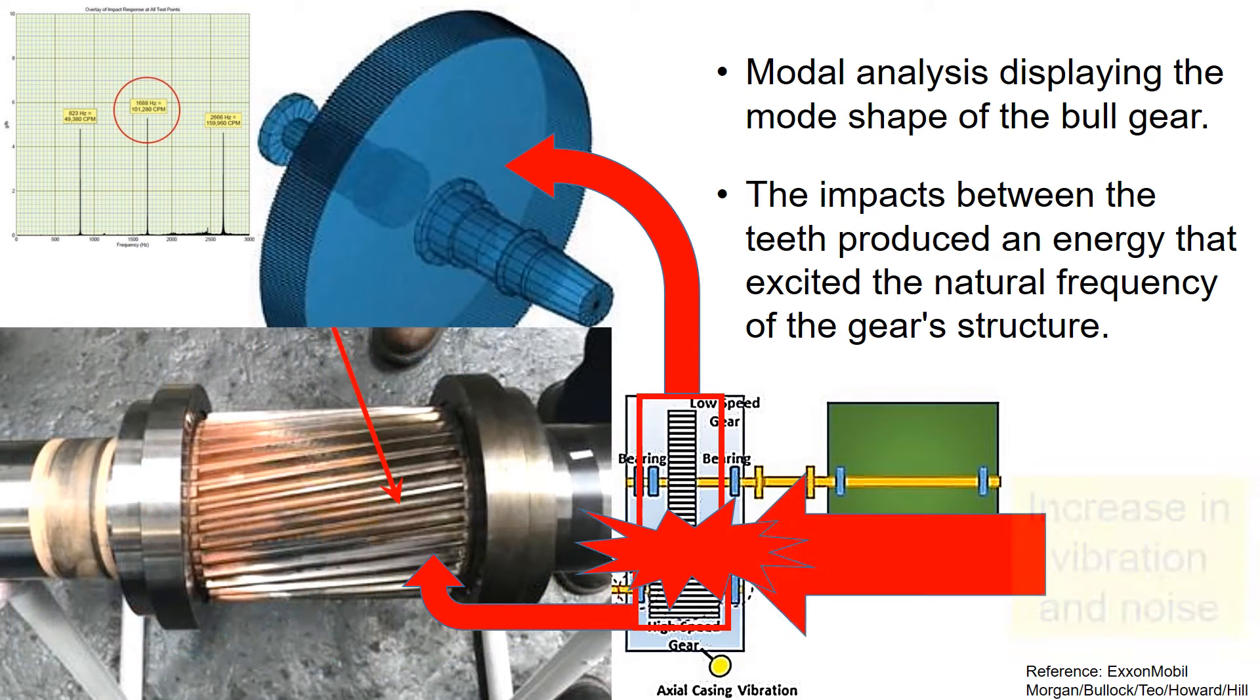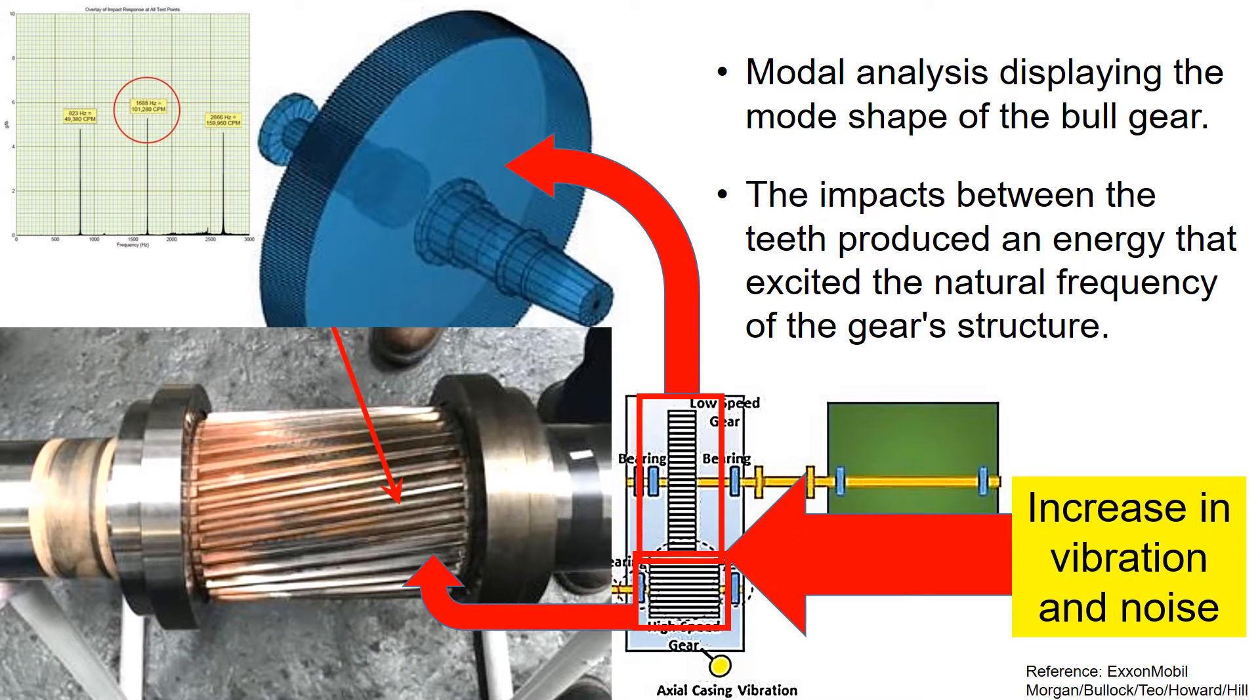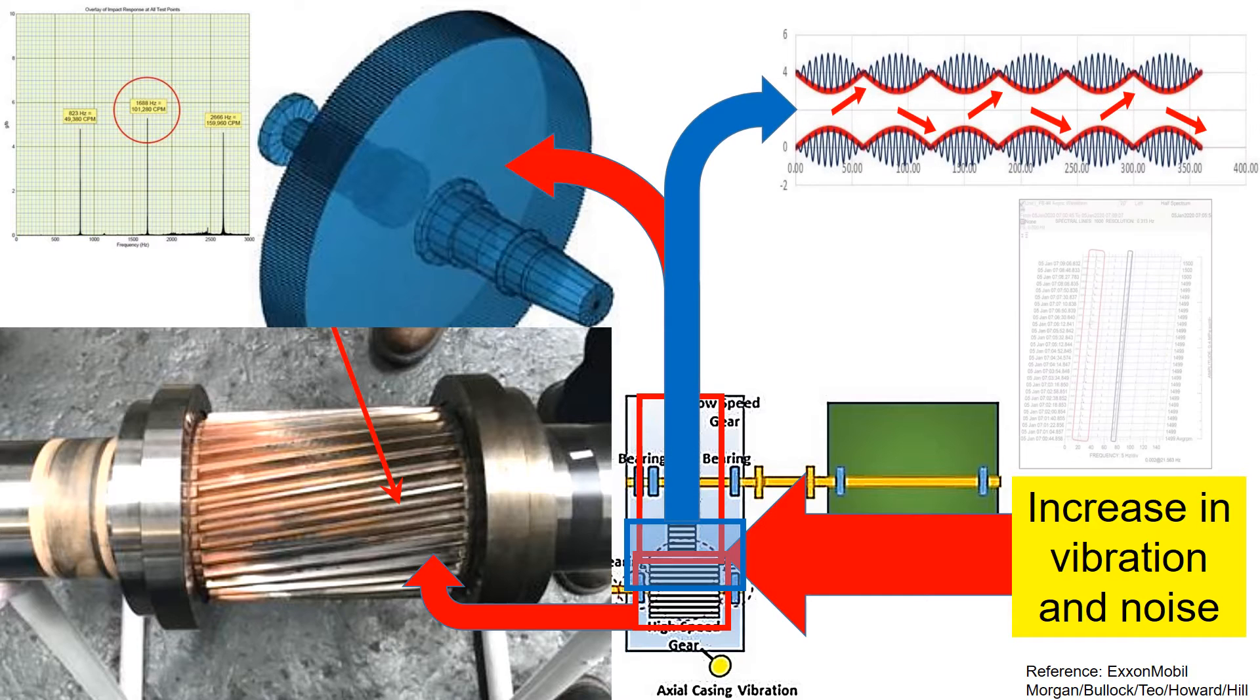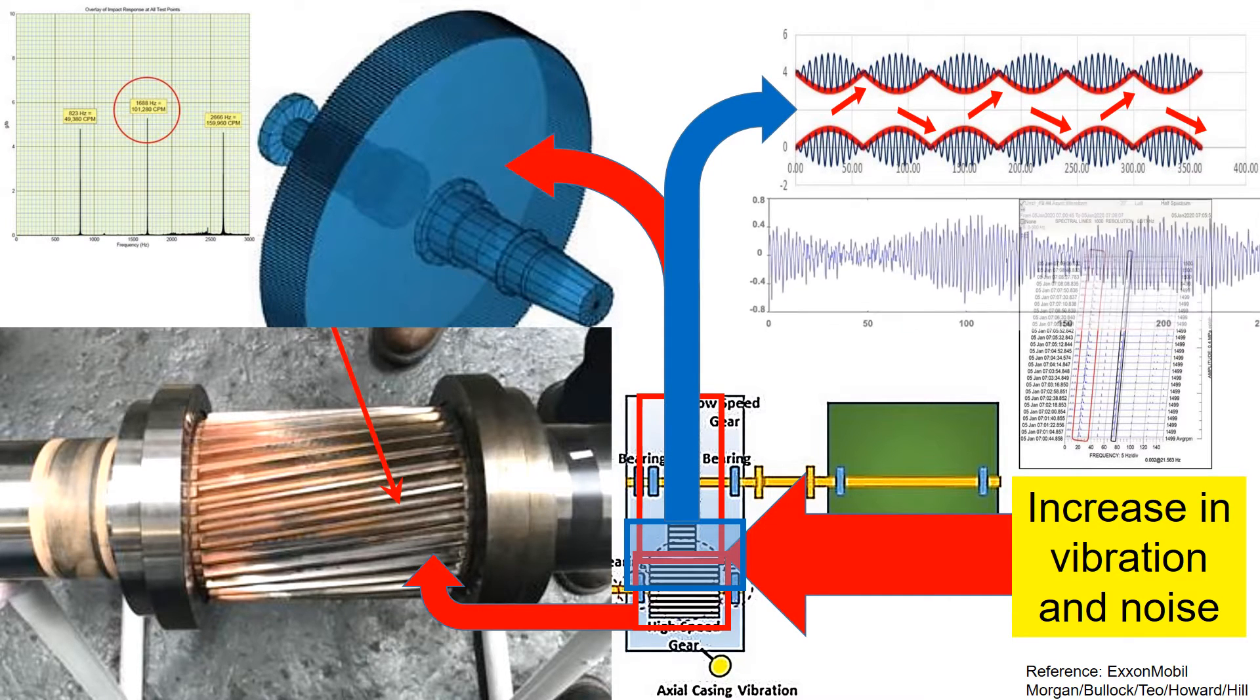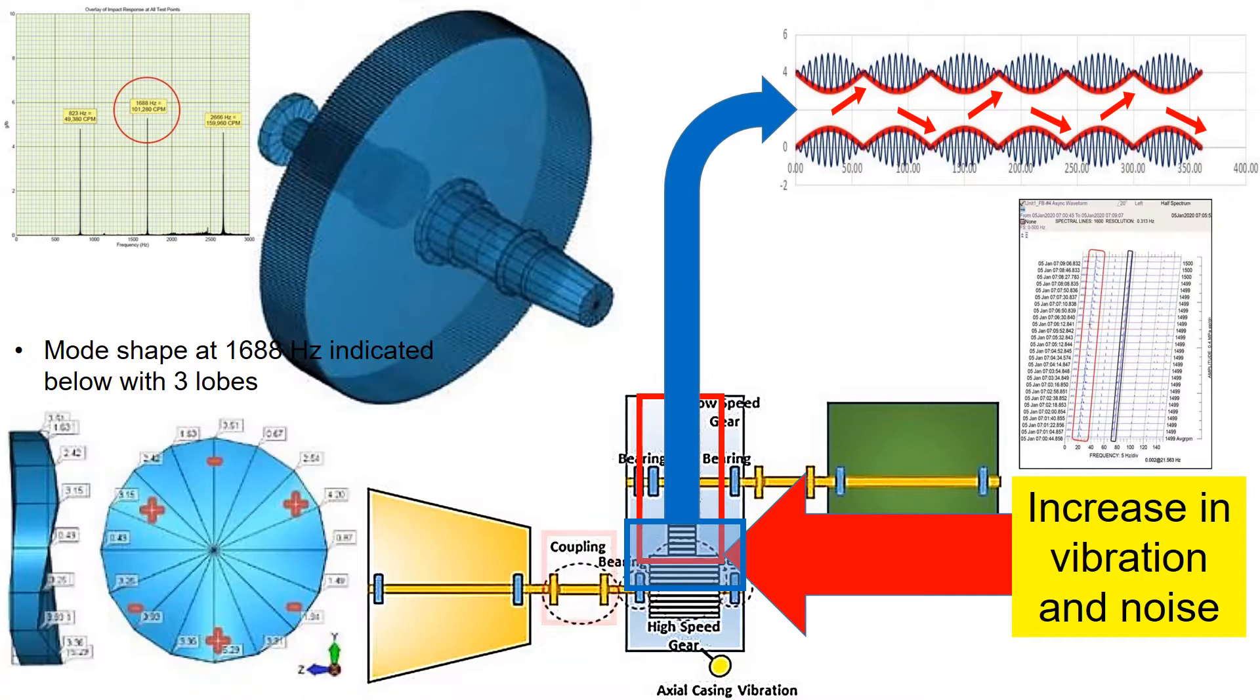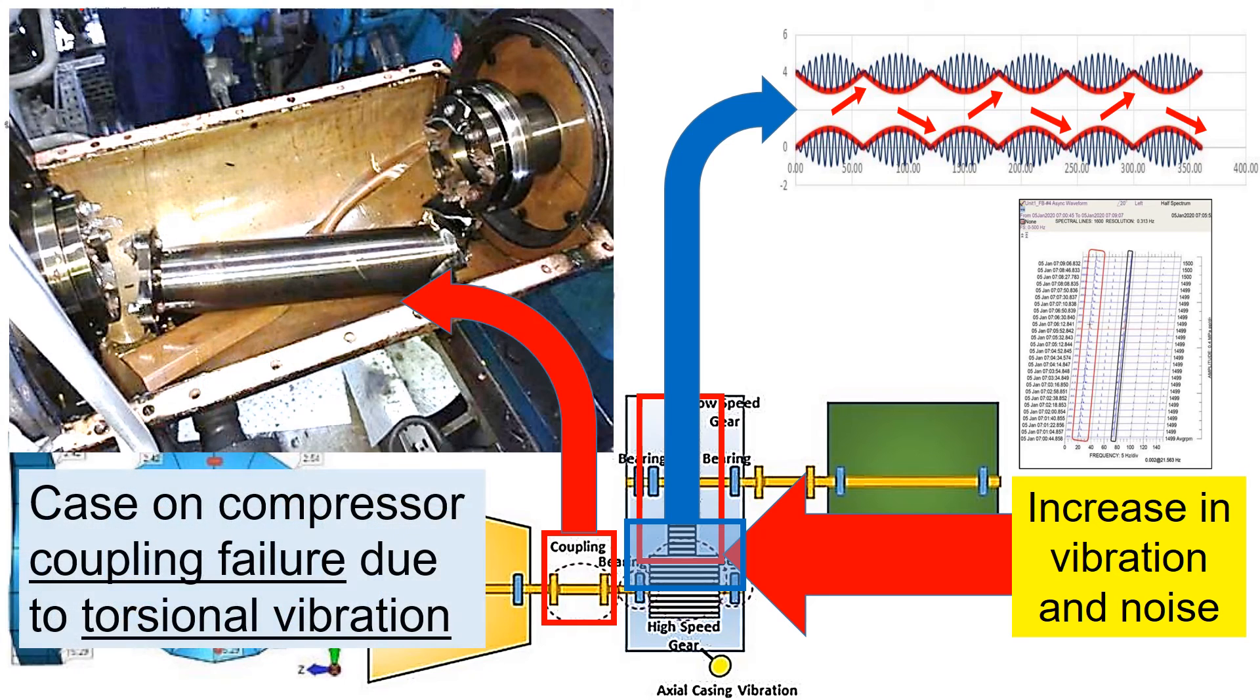As the gear continues to wear, there is a noticeable increase in vibration and noise. This gear wear increases the impact between the gear teeth. So, large vibration ultimately leads to breaking the coupling.